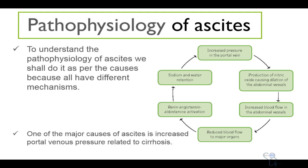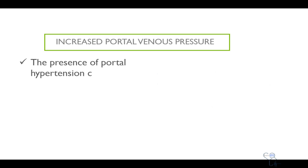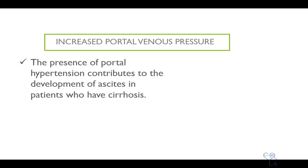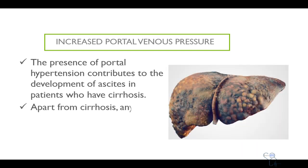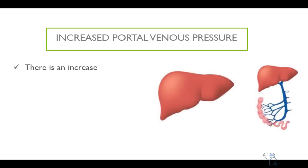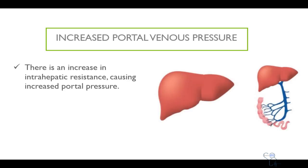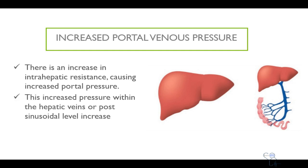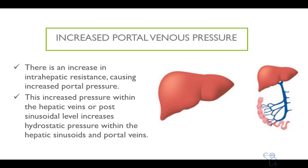One of the major causes is liver cirrhosis, as it causes an increase in portal venous pressure. The presence of portal hypertension contributes to the development of ascites in patients with liver cirrhosis. Apart from cirrhosis, any cause of increased resistance to hepatic or portal venous flow can lead to ascites. There is an increase in intrahepatic resistance causing increased portal pressure, which increases hydrostatic pressure within the hepatic sinusoids and the portal veins.